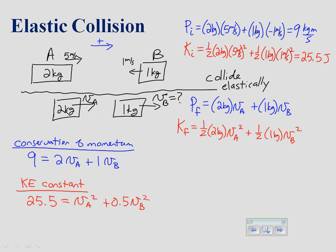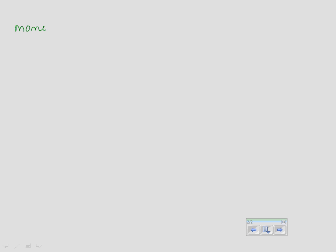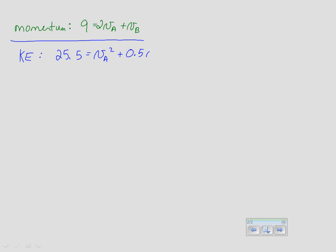Now we have two equations with two unknowns. We'll use substitution to solve for the two unknown velocities. The momentum equation is: 9 = 2VA + VB. The kinetic energy equation is: 25.5 = VA² + 0.5 × VB².